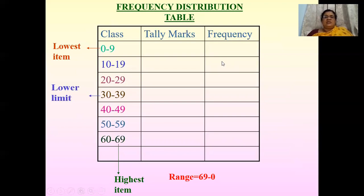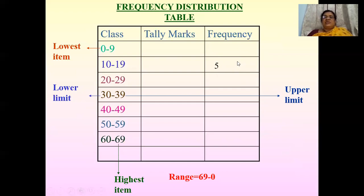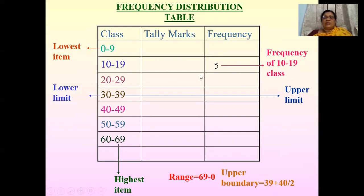In this table, 30 is the lower limit and 39 is the upper limit. In class interval 10 to 19, the frequency is 5 — so we say the frequency of the class 10 to 19 is 5. The upper boundary is the average between 39 and 40: that is, 39 plus 40 divided by 2.